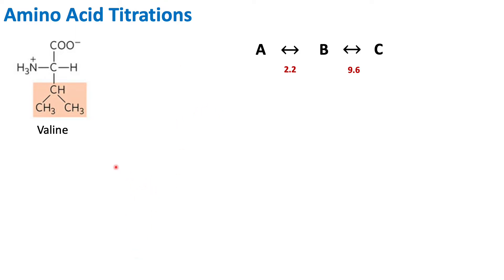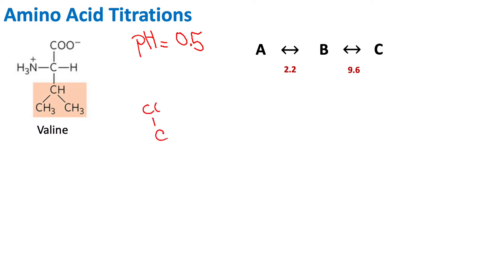Now let's say we add this valine into a solution that has a pH of 0.5. At a pH of 0.5, we are below both of these pKa values. If we are below the pKa value, we are below the value which leads to dissociation of the proton. The 2.2 reflects the pKa dissociation of that hydrogen from the carboxylic group. If we have not reached this pH value, the proton will not deprotonate, so the carboxyl group will be protonated. Our amino group will also be protonated because we have not reached that 9.6 value yet.